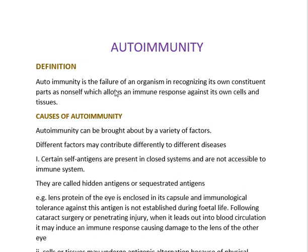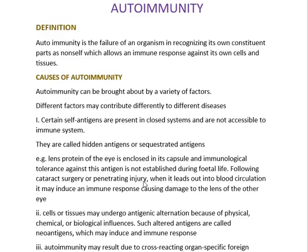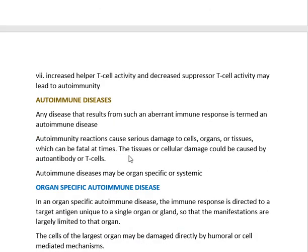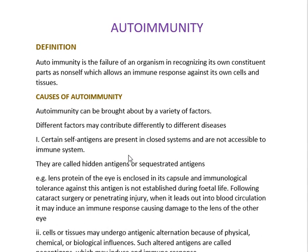As mentioned, autoimmunity is a failure of an organism in recognizing its own constituent parts as non-cells, which allows an immune response against its own cells and tissues. Any disease that results from such an abrupt immune response is called an autoimmune disease. Autoimmunity basically means immunity to cells — a condition where the immune system mistakenly attacks and destroys healthy body tissues. This can also be called autoallergy, though the term autoimmunity is more widely used.